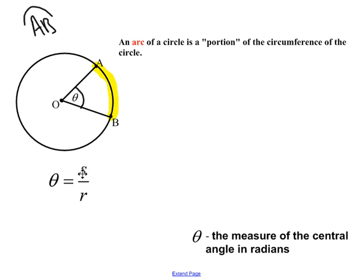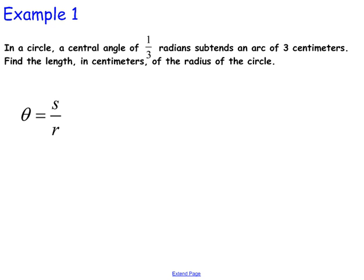Okay next, S is the length of the arc, so this is S, it's the length of the arc. And R is the radius of the circle. Okay let us continue with an example. In a circle, a central angle of one-third radians subtends an arc of three centimeters. Find the length in centimeters of the radius of the circle.